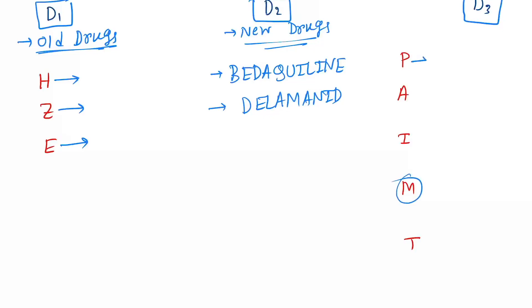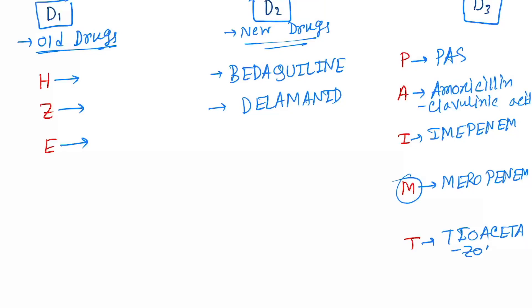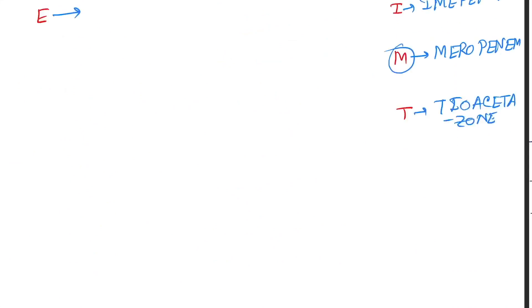D3: here you can remember mnemonic PAIMT. The drugs are PAS first, next is amoxicillin-clavulanic acid, I for imipenem, M for meropenem, and T for thioacetazone.